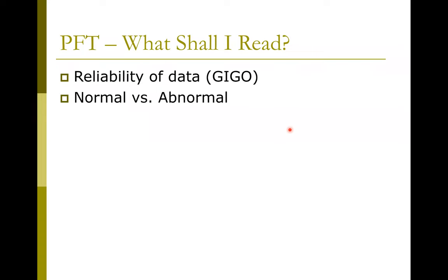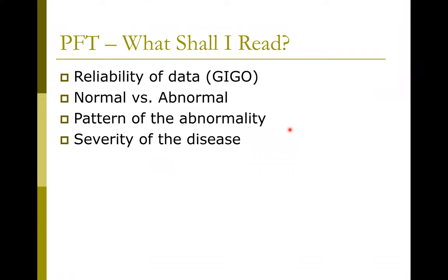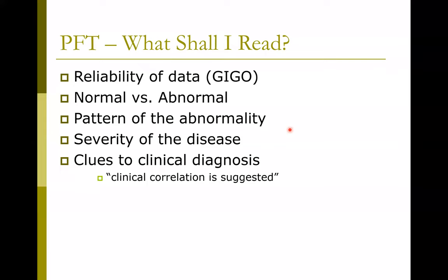We obviously look for normal versus abnormal values, and we're going to talk about that — most guidelines now are pushing the envelope in terms of what's normal and what's abnormal. Then look for the pattern of abnormality: does this person have a pattern of obstructive or restrictive lung disease, or perhaps a mixed picture? What's the severity — mild, moderate, severe, very severe? And then look for clues for clinical diagnosis. PFTs cannot provide a clinical diagnosis, but if someone is elderly with a significant smoking history and now has an obstructive pattern, that's pretty likely to be COPD and not pulmonary fibrosis.